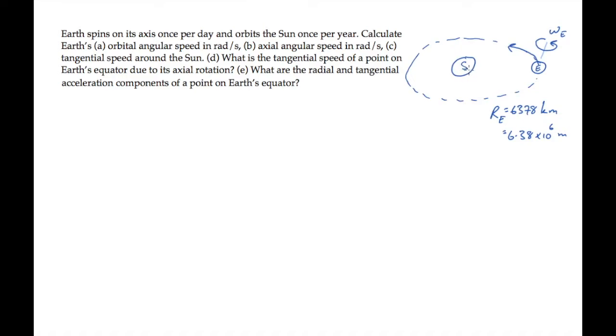And its orbital radius around the Sun, one astronomical unit, one AU, is about 150 million kilometers. That's 1.50 times 10 to the 11th meters, and we'll call that r sub se, the distance between the Sun and the Earth.